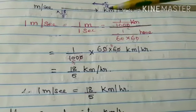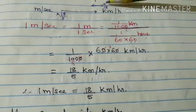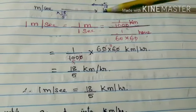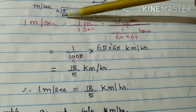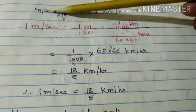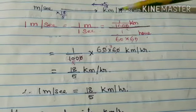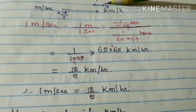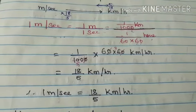To summarize: when converting from meters per second to kilometers per hour, multiply by 18/5. When converting from kilometers per hour to meters per second — going from bigger to smaller — multiply by 5/18, and write the unit accordingly.